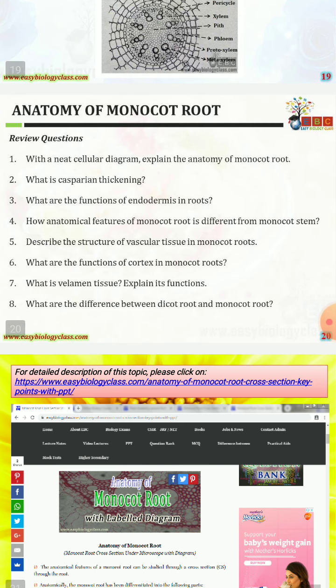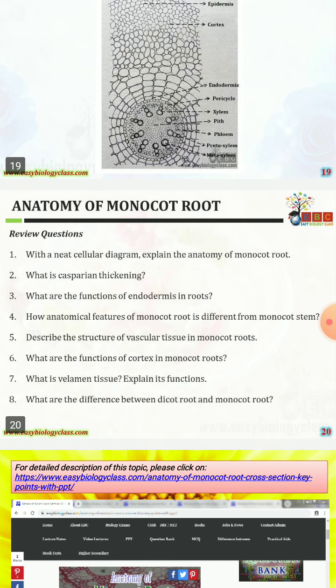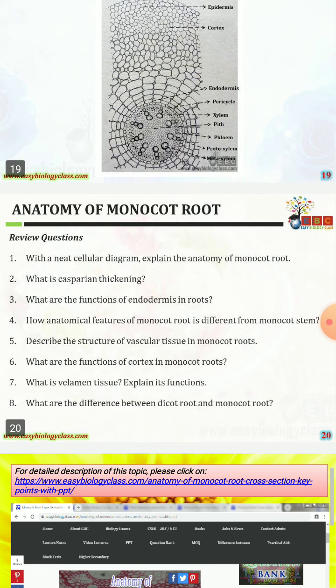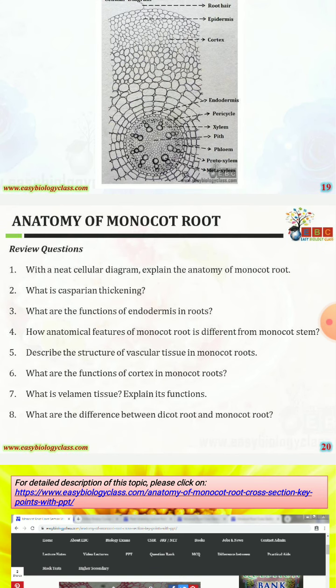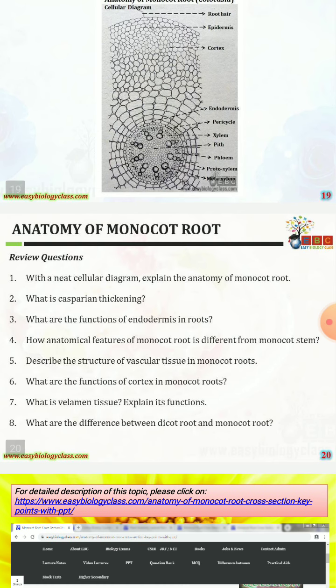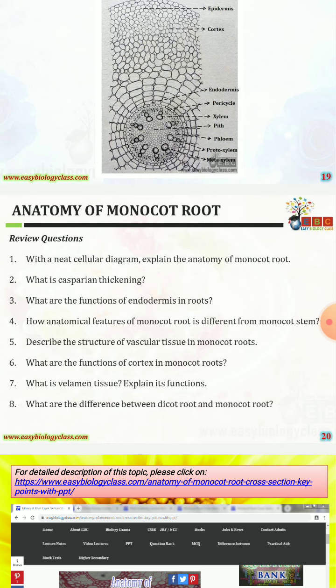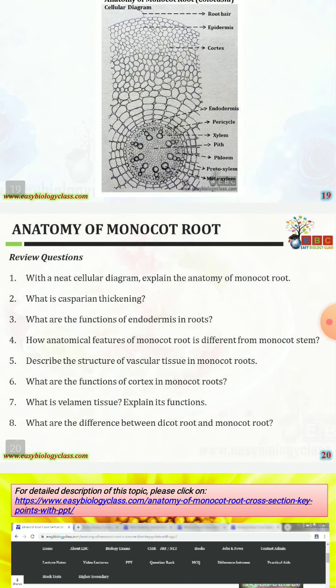Review questions that might be asked about monocot root: With a neat labeled diagram, explain the anatomy of monocot root. What is casparian thickening? What are the functions of endodermis in roots? How do anatomical features of monocot root differ from monocot stem? Describe the structure of vascular tissues in monocot roots. What are the functions of cortex in monocot roots? What is velamen tissue and explain its function. What are the differences between dicot root and monocot root? Hope you enjoyed the video — stay motivated, God bless you.